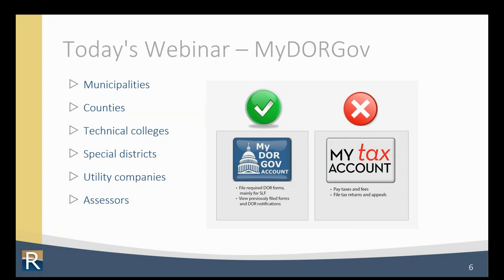Who should be in this webinar? Municipal Clerks and Treasurers, County Clerks and Treasurers, Special District Representatives, and Accountants or Auditors who file forms for office holders. Assessors may also want to sit in since there will be questions specific to the PA 551, the 2023 Personal Property Value Report. If you are a Register of Deeds, you don't have anything to file in MyDORGov, so you won't see anything related to your job during this webinar.